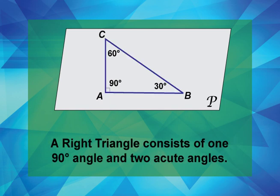A right triangle consists of one 90 degree angle and two acute angles. This is an example of a right triangle. See the right angle? See the two acute angles?